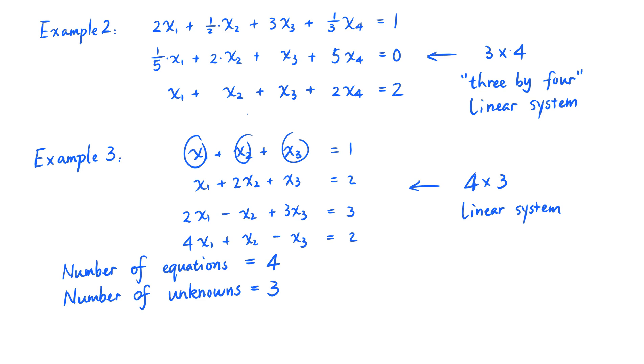So in general, an m by n linear system is a system of m linear equations about n unknowns. So let's say the n unknowns are x sub 1 to x sub n, and there are m linear equations about these unknowns.